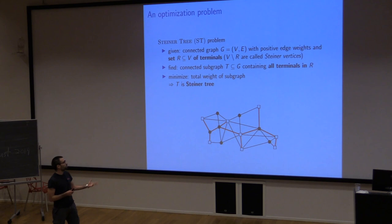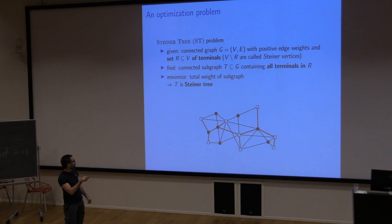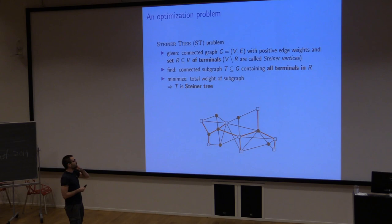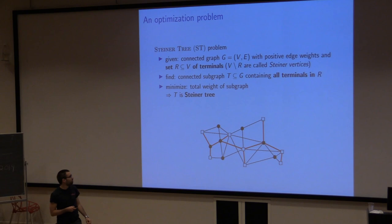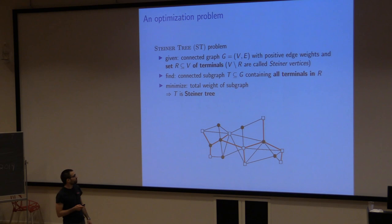I'm given an undirected graph with edge weights and a special set of vertices called terminals, shown as boxes in the pictures. I want to find a tree that contains all of the terminals and minimize the total weight of that tree.